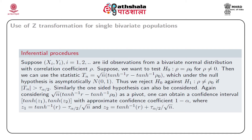Similarly, the one-sided hypothesis can also be considered. For confidence interval estimation we can use the quantity sqrt(n) multiplied by tanh-inverse(r) minus tanh-inverse(rho) as a pivot, and obtain a confidence interval with endpoints tanh(z1) and tanh(z2) with approximate confidence coefficient 1 minus alpha, where z1 is tanh-inverse(r) minus tau_{alpha/2} divided by sqrt(n), and z2 is tanh-inverse(r) plus tau_{alpha/2} divided by sqrt(n).